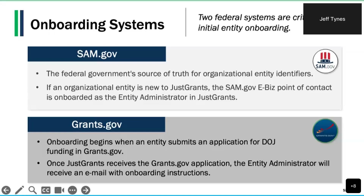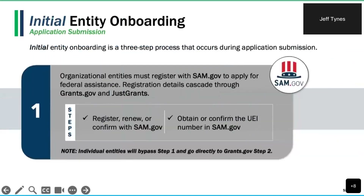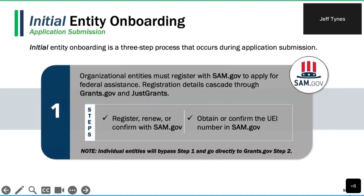Once JustGrants receives the Grants.gov application, the entity administrator will receive an email with onboarding instructions. If you're an individual entity, initial onboarding relies solely upon information provided in your Grants.gov application. Individuals must use an alphanumeric identifier such as the EIN or TIN, and must use that consistently in JustGrants. The entity administrator in JustGrants is automatically assigned to the individual listed as your eBiz point of contact in your SAM.gov account. The SAM.gov eBiz point of contact is responsible for registering, renewing, or confirming your SAM.gov account each year, and also obtains or confirms the correct UEI number at SAM.gov.